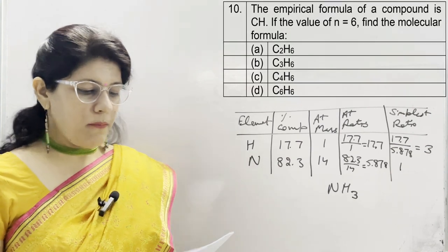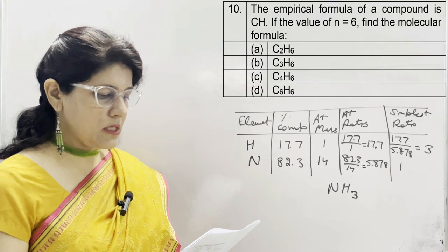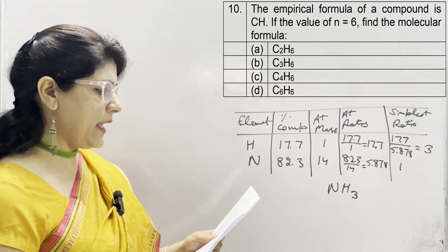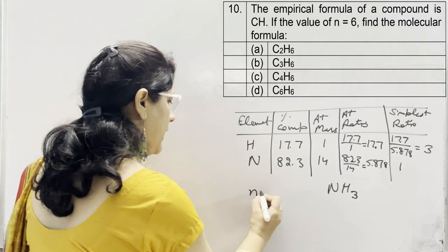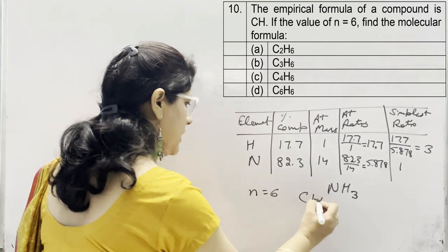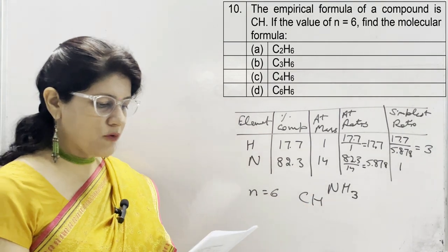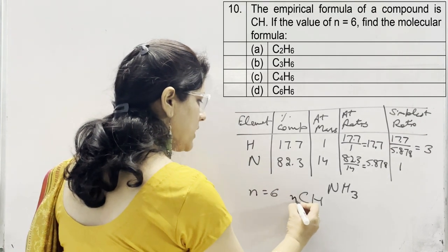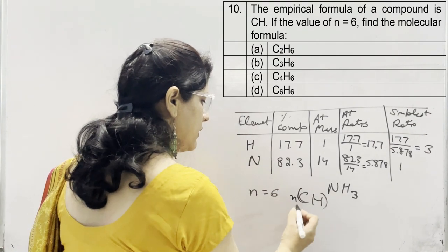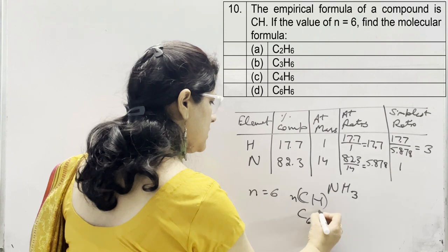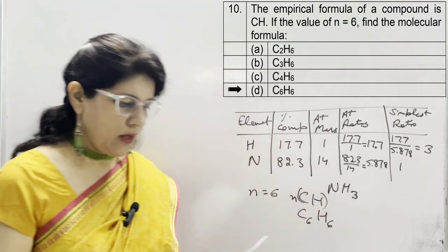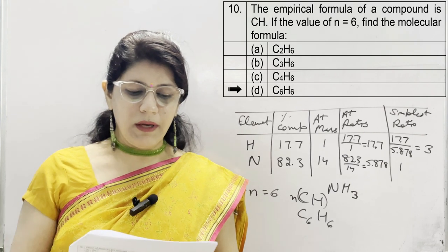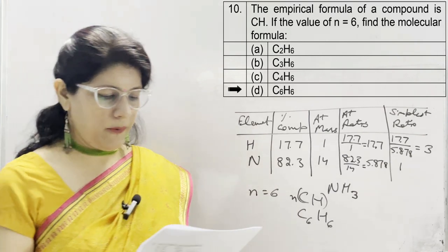Question 10: the empirical formula of a compound is CH. If N = 6, find the molecular formula. We multiply the empirical formula by N: C×6 and H×6 gives C₆H₆. This is option D, which is correct. Options A, B, and C are incorrect.